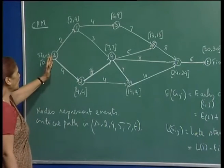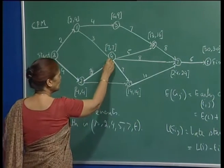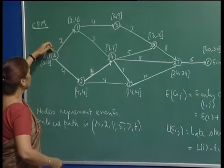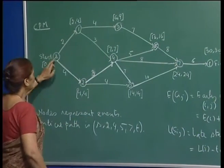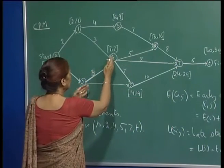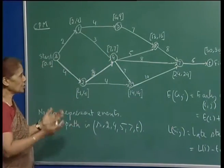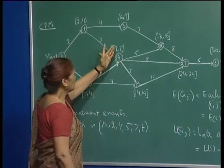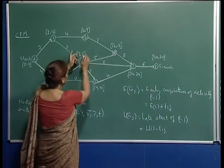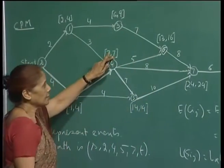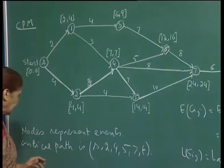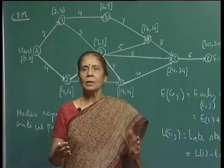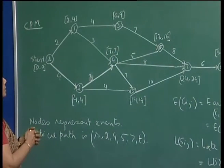Nodes are events. For example, node 4 indicates the completion of activities 1-4 and 2-4. Activity 1-4 cannot begin until node 1 is complete, and 2-4 cannot begin until node 2 is complete. So node 4 represents the completion of all preceding activities. The late start value at a node tells you that you must not arrive there later than that time, or the following activities will be delayed.